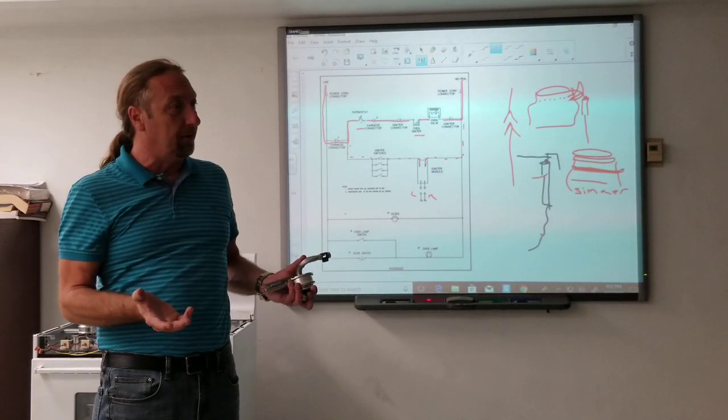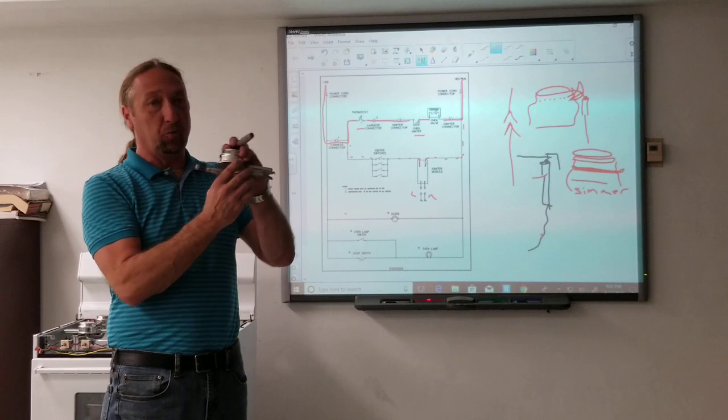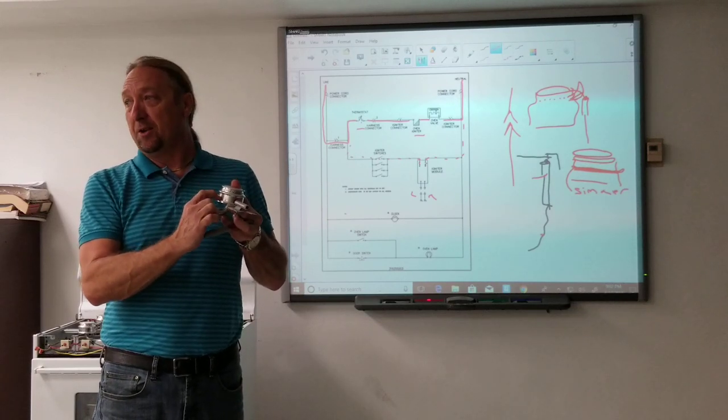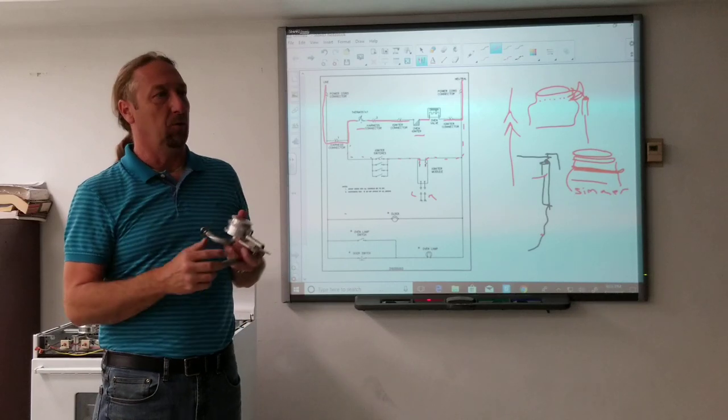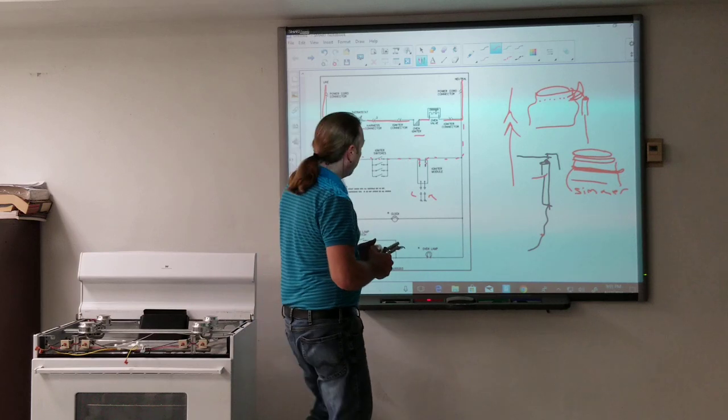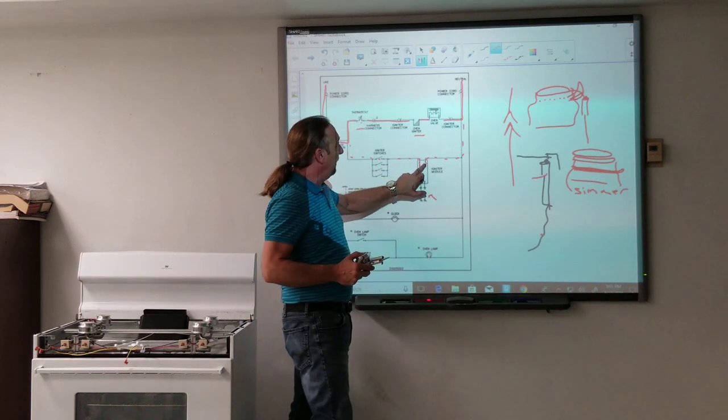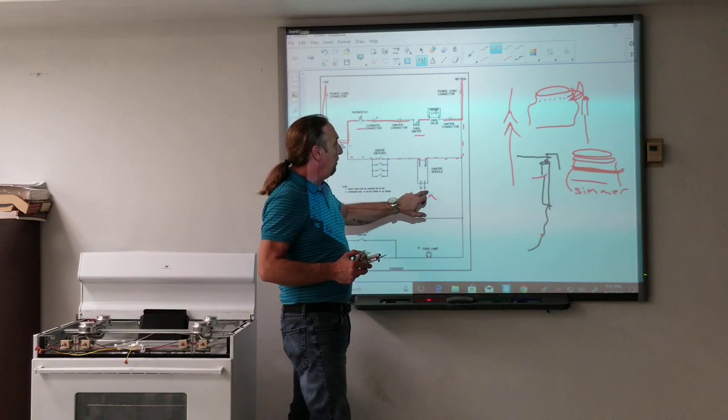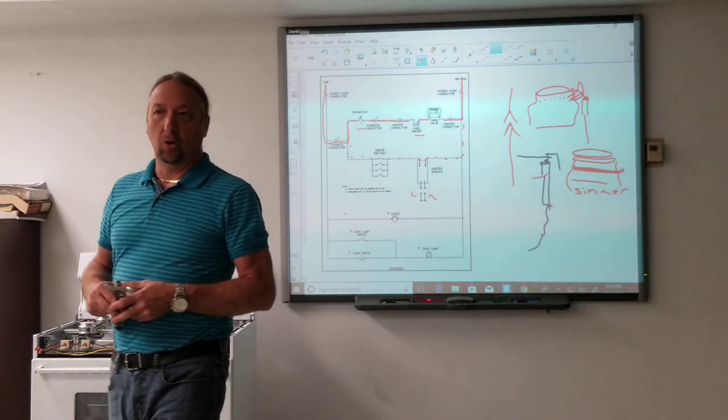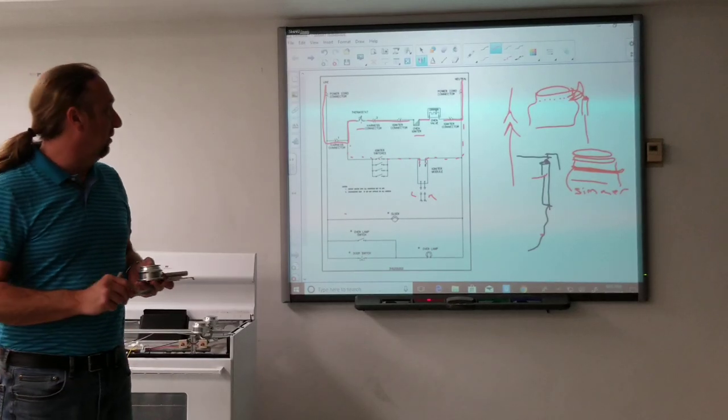You could light the burner with a match or a lighter, but it wouldn't light with the igniter. The spark was jumping where you want it to jump, but the simmer flame was right in the middle here. If that's not good, it's not working. So if both of them are not working and you have 110 here, the module's bad. It's very simple to check those things out.